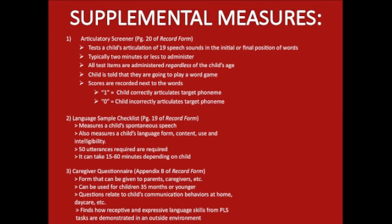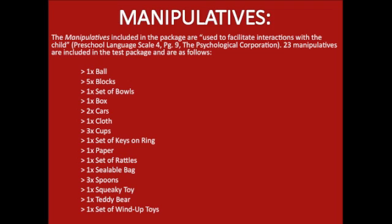The language sample checklist measures a child's spontaneous speech, language form, content, use, and intelligibility. Fifty utterances are required of the child, and it could take 15 to 60 minutes depending on the child. The caregiver questionnaire is a form that can be given to parents, caregivers, and so on. It can be used for children 35 months or younger. Questions relate to the child's communication behaviors at home, at daycare, and similar settings, finding how receptive and expressive language skills from PLS tests are demonstrated in an outside environment.